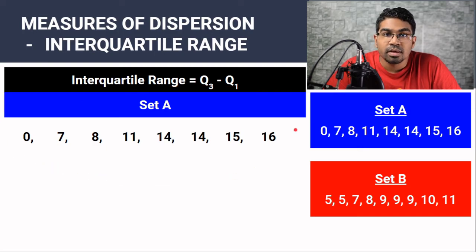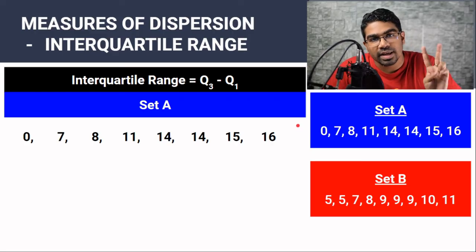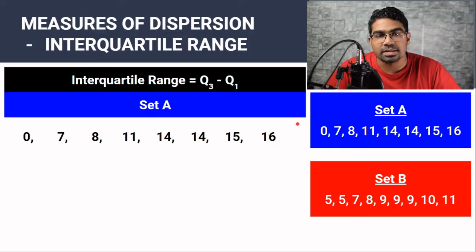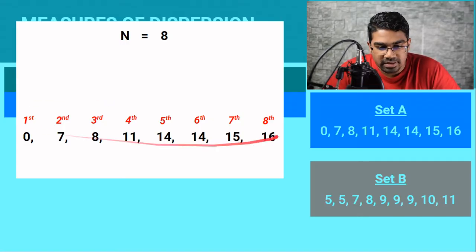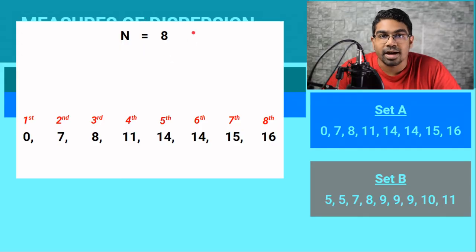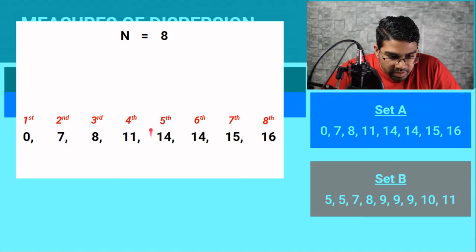Let's take a look at set A again. Before we can find the first quartile and the third quartile, we must first find the median. The median is also the second quartile. The median is the middle value after the data has been arranged in ascending order. The method of finding the median depends on whether the number of data is odd or even. For set A, there are 8 data, so the number of data is even. When the number of data is even, the middle value is between the 4th and the 5th value.